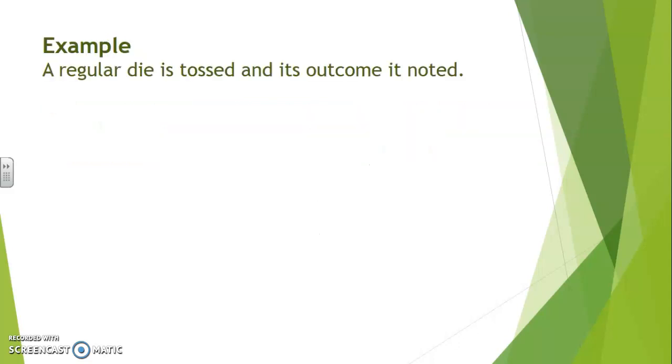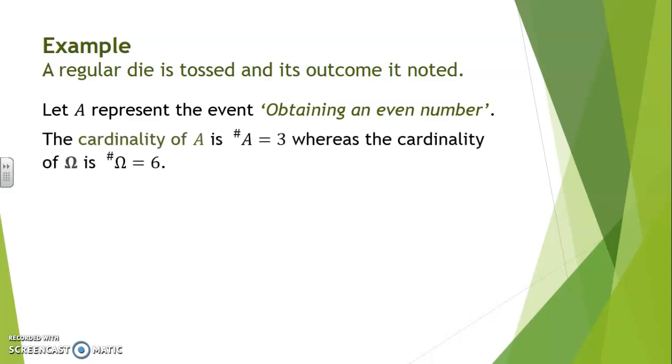For example, a regular die is tossed and its outcome is noted. Let's say A represents the event obtaining an even number. As we said earlier, the cardinality of A is 3, whereas the cardinality of omega, the sample space, is 6.